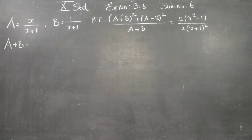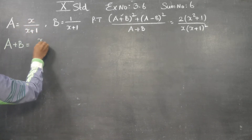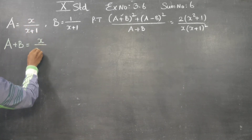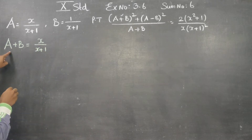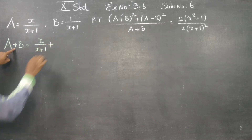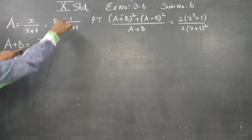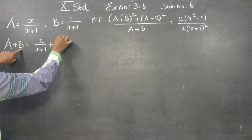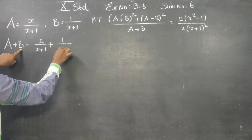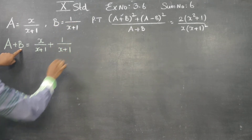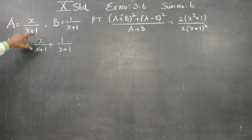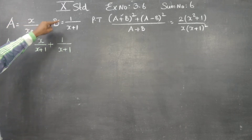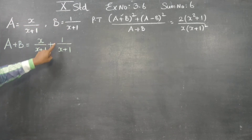What is my a plus b? My a is x by x plus 1. What is my b? B is 1 by x plus 1. So a is x by x plus 1, and b is 1 by x plus 1.